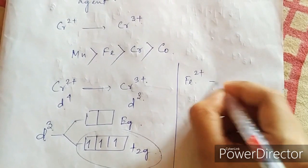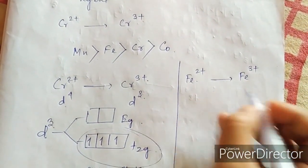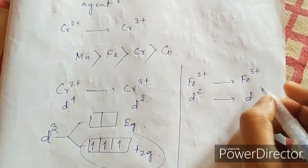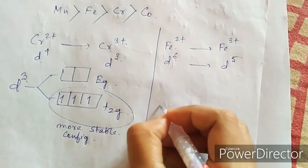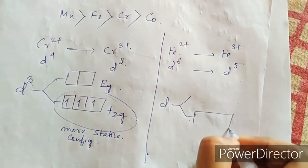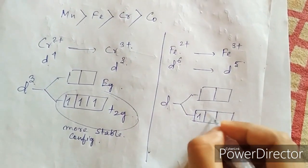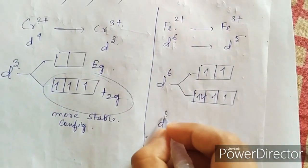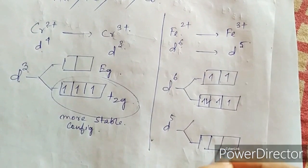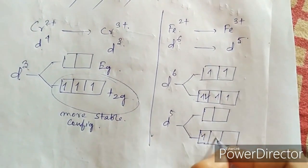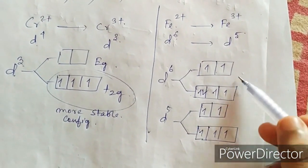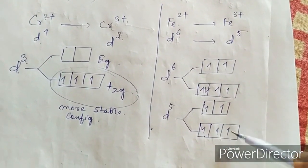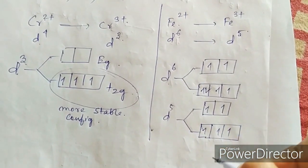When iron 2+ converts into iron 3+, you can see the configuration changes from D6 to D5. In the d orbital, all the subshells have an electron. If it is D6, it looks like this; if it is D5, then 1, 2, 3, 4, 5 — all the subshells have an electron. From D6 to D5, it doesn't change as much, so it doesn't affect the half-filled d orbitals at all.